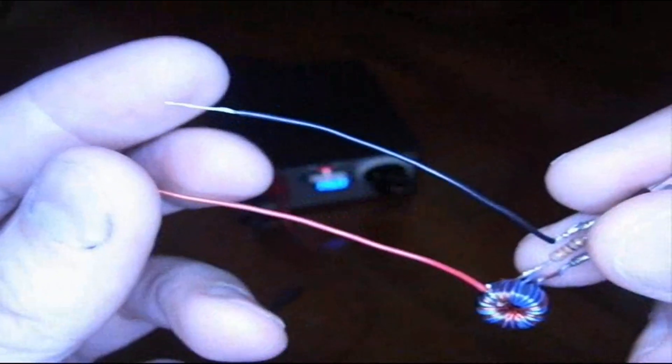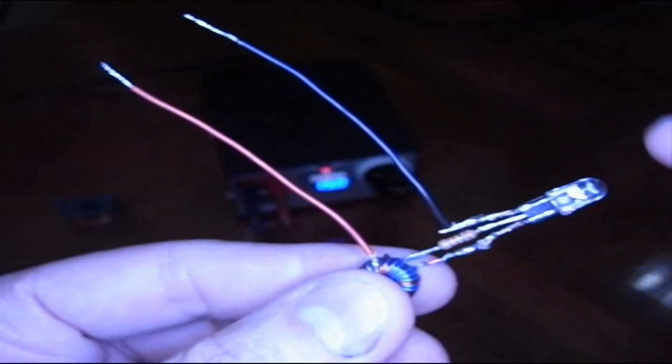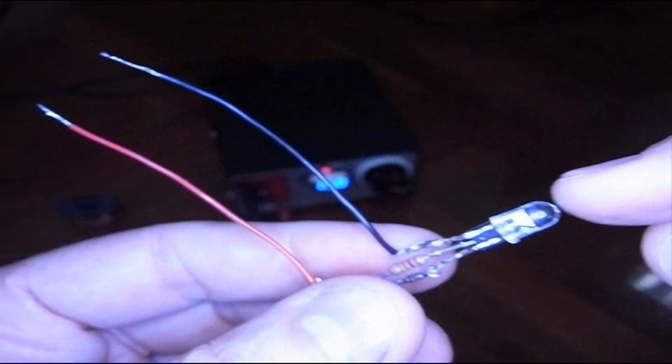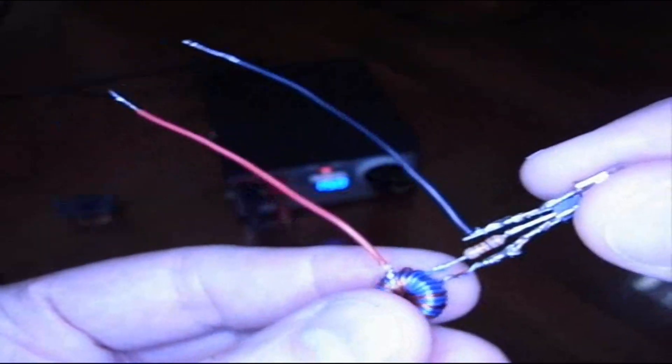It takes some low voltage that is too low to light up a bulb. It transforms it through a coil and makes it into a high enough voltage to light a light bulb. That's pretty much it.